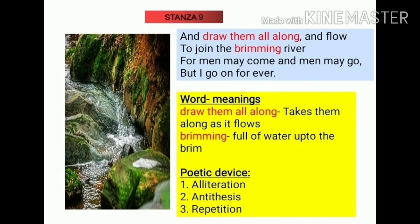Coming to the ninth stanza: 'And draw them all along and flow to join the brimming river, for men may come and men may go, but I go on forever.' When the brook is passing, it takes everything along — the blossoms, the fish — and goes toward its destination, the brimming river. 'For men may come and men may go' means men are transient — they come with their birth and go from the earth with their death — they are transient, temporary, mortal. But the brook is everlasting, ever flowing.